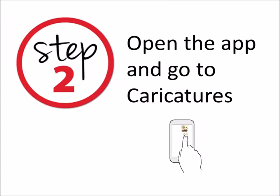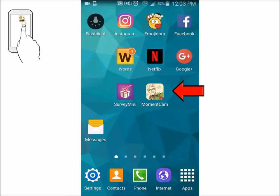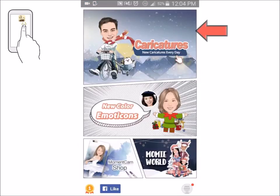Step 2 is to open the app and go to caricatures. So you click your icon — it should look something like this — and the very top one is caricatures.